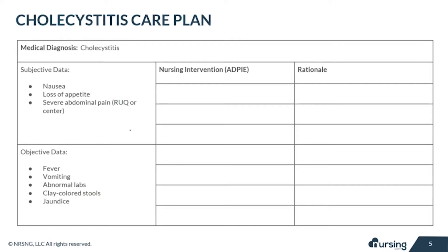Now let's look at our objective data. The inflammation of the gallbladder might cause your patient to have a fever. Your patient may begin vomiting due to the blockage of the bile. The patient may have abnormal lab values like elevated liver enzymes, since the liver creates the bile that travels through the bile duct into the gallbladder. When cholecystitis progresses and tissue begins to die, the liver becomes more affected, resulting in elevated liver enzymes and sometimes jaundice. Bilirubin may be elevated indicating bile duct obstruction as well. The patient might also have clay-colored stools because of the lack of bile to change the color of the stool to brown.